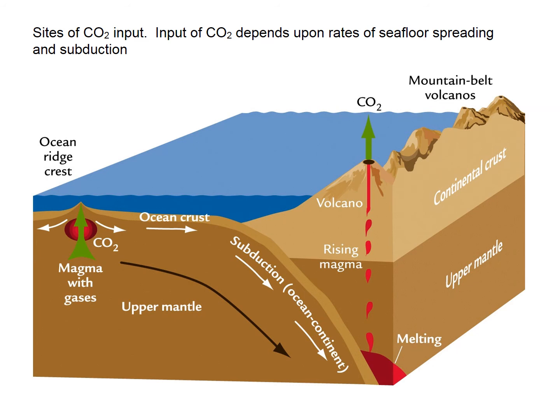Looking now at the long-scale carbon cycle: CO2 comes into the atmosphere ultimately from the deep Earth — mid-ocean ridge spreading and volcanism give off CO2 gases into the atmosphere. This can be thought of as a forcing because it's not dependent on climate at all. If we start to increase the rate of volcanism over long geological timescales, this will increase the amount of CO2 in the atmosphere, and could be something driving our long-term climate change.